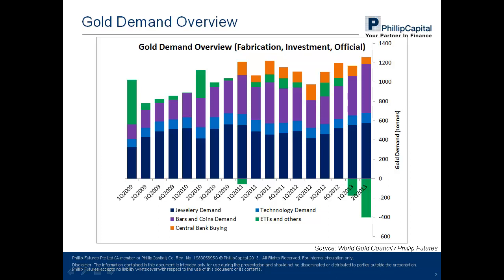Gold demand is made up of 5 types of users and can be classified into 3 broad categories by purpose of use. First, fabrication use, made up of jewelry demand (the dark blue portion) and technology demand (the light blue portion). Second, investment demand, made up of bars and coins demand (the violet portion) and paper gold assets such as ETFs (the green portion). Lastly, official demand from central banks (the orange portion).